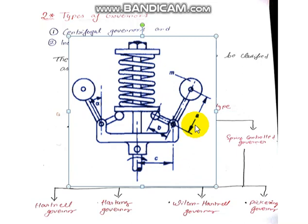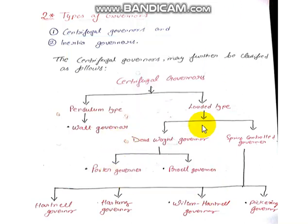So we have seen what each governor looks like and the types available. I think you will now understand the types of governors, how the governor works, and its use. Next lecture we will start discussing one governor in detail, and we will do numerals. Thank you for watching this video — please like and share it, and don't forget to subscribe.